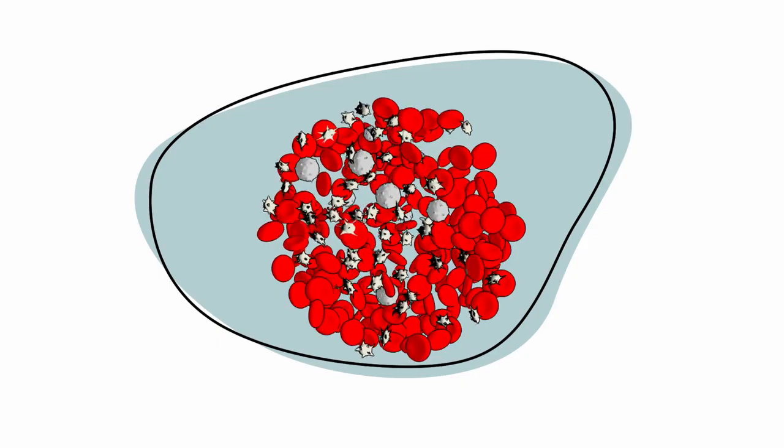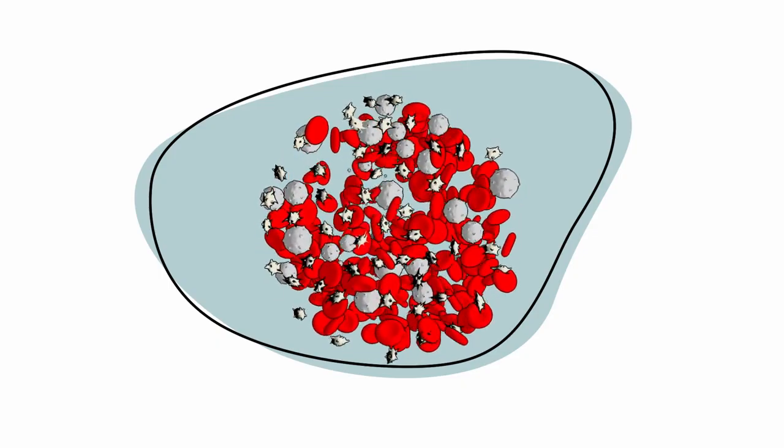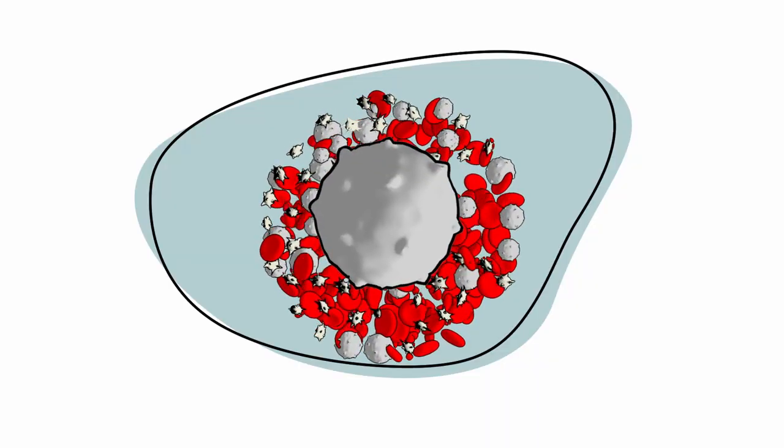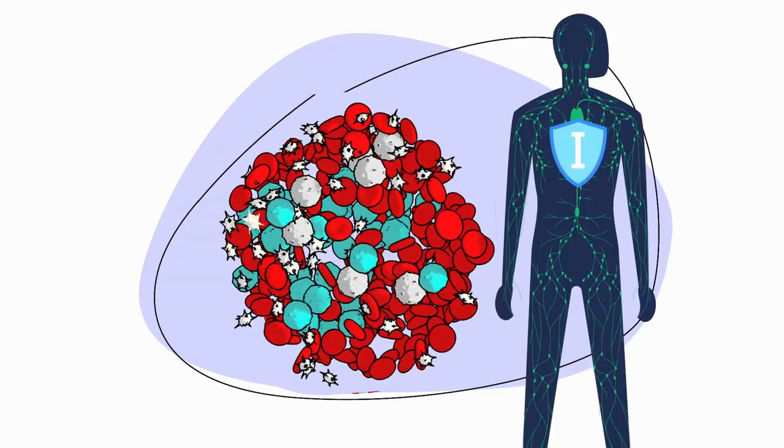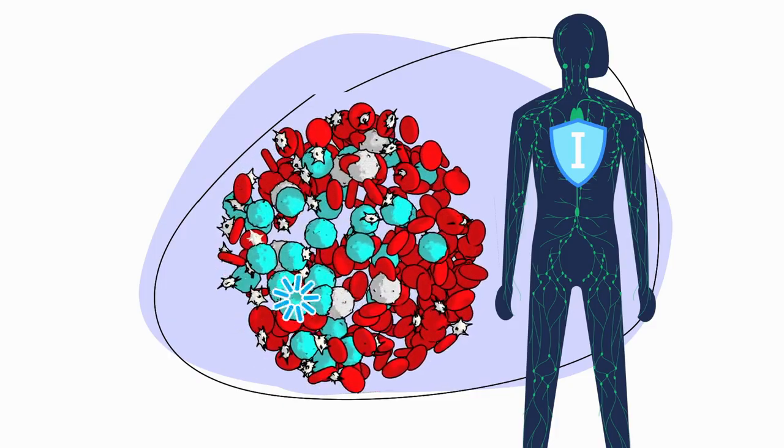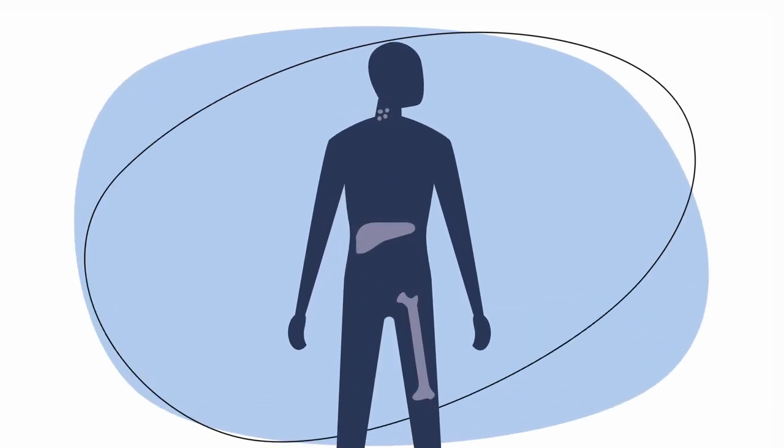Mantle cell lymphoma, or MCL, starts when a type of white blood cell called B lymphocytes begin to grow too fast. These cells are part of your immune system and normally help fight infection. MCL grows in your lymphatic system, which includes your lymph nodes, some organs, and your bone marrow.